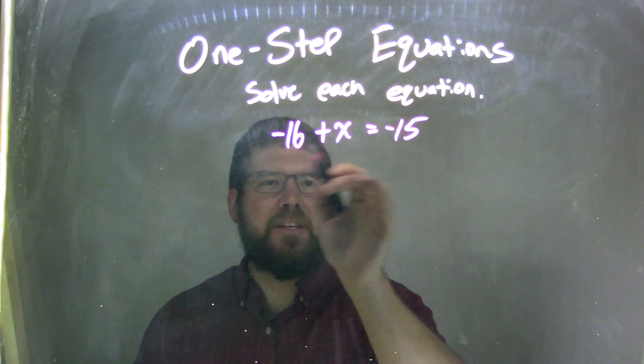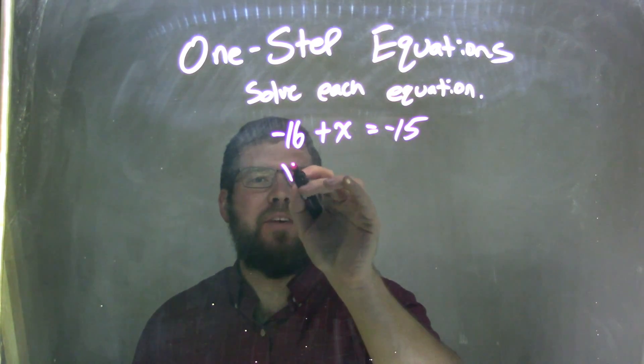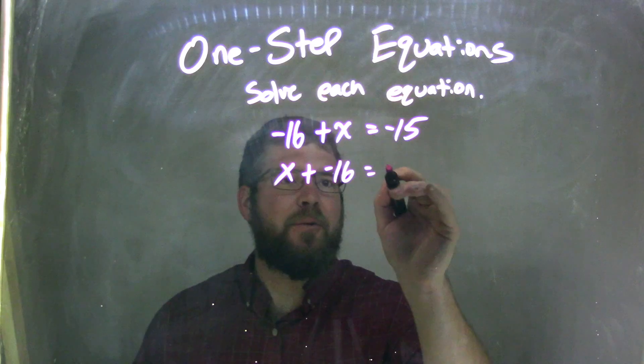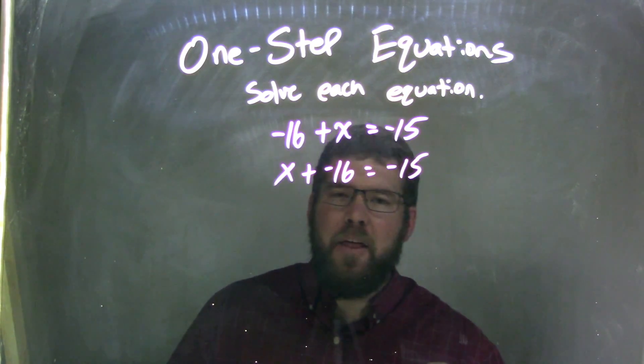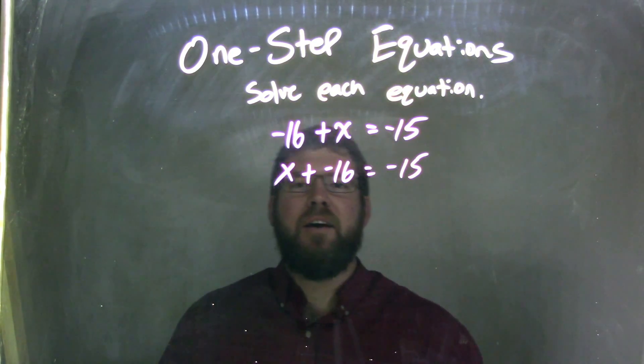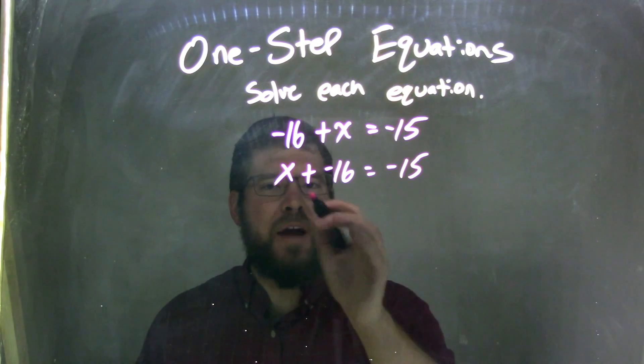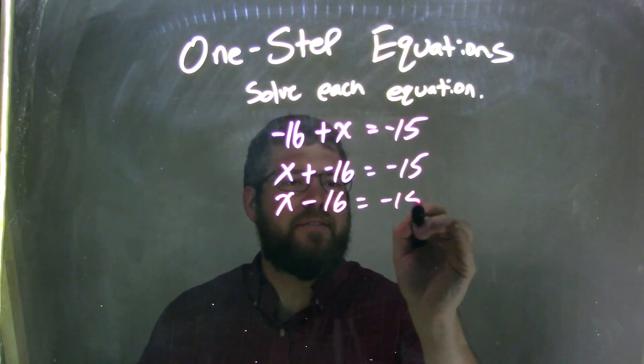Well, maybe if I rearrange this, maybe that's a little easier to see. So, I have x first, plus a negative 16 equals a negative 15. Now, that might be easier to see. Adding a negative is the same thing as subtraction, x minus 16 equals negative 15.